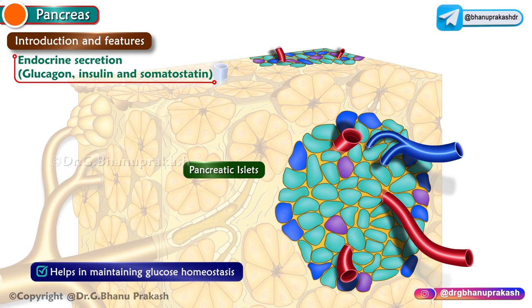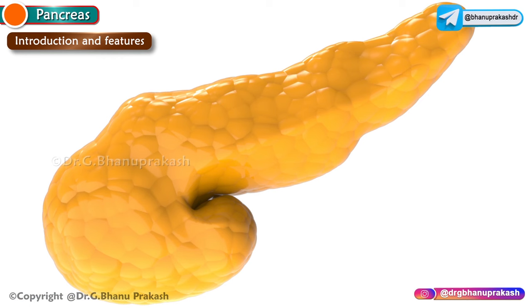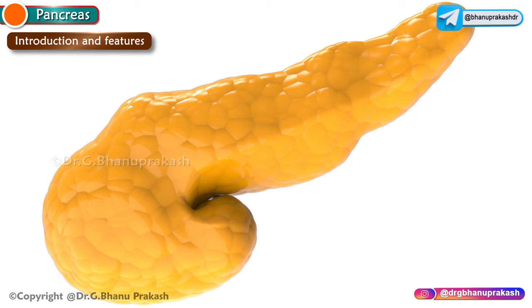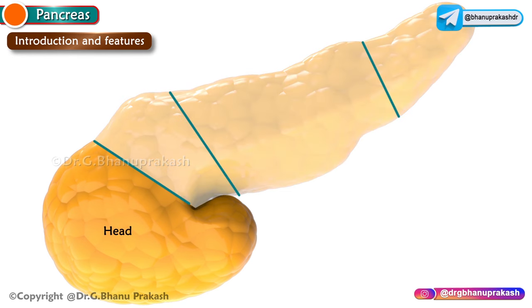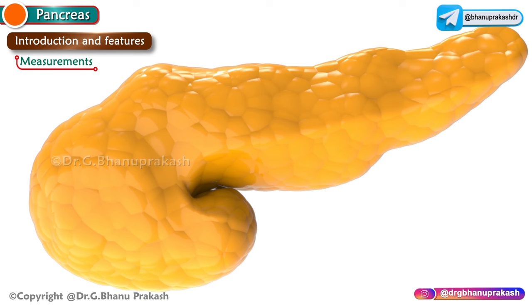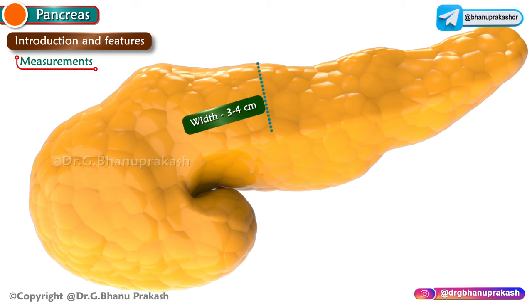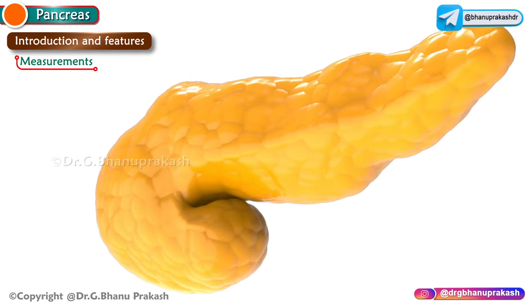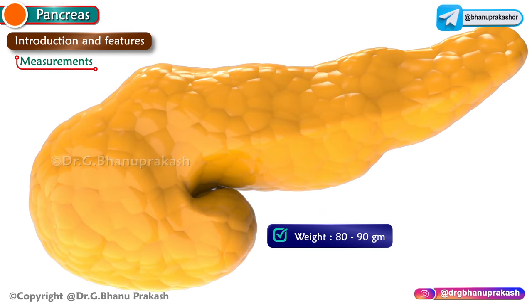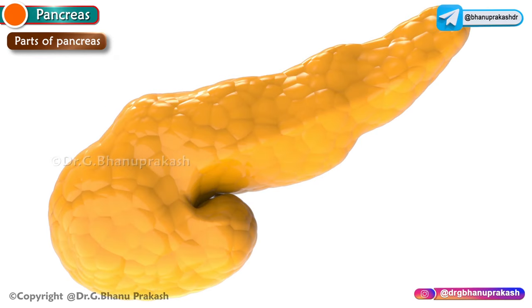It also has an endocrine activity. The endocrine secretions like glucagon, insulin, and somatostatin are secreted directly into the bloodstream and help mainly in maintaining glucose homeostasis, taking part in metabolic processes. The shape of the pancreas is J-shaped or retort-shaped; the bowl of the retort represents the head and the stem represents the neck, body, and tail. It is approximately 12 to 15 centimeters in length, 3 to 4 centimeters in width, 1.5 to 2 centimeters in thickness, and weighs 80 to 90 grams.